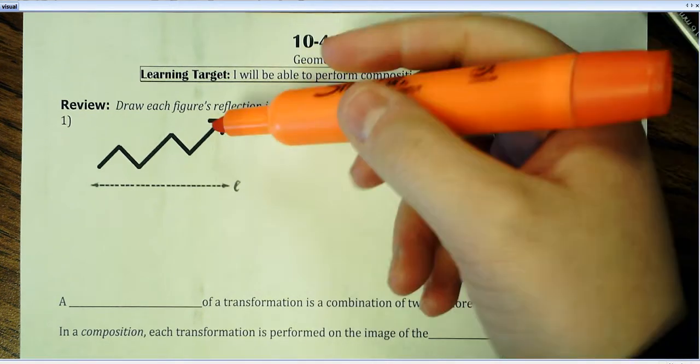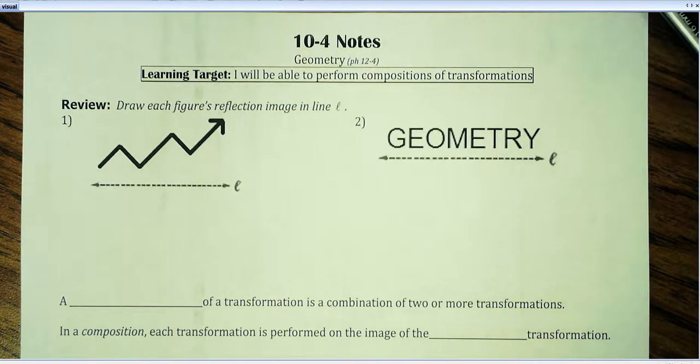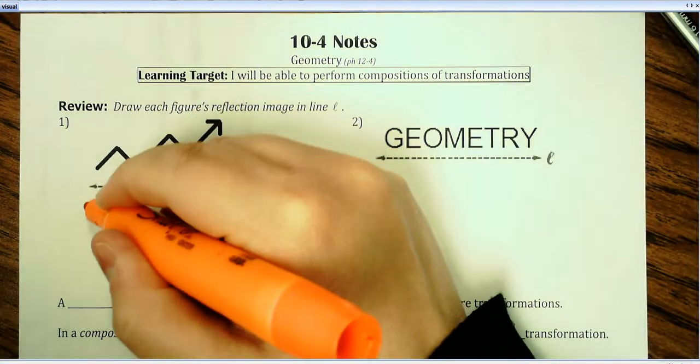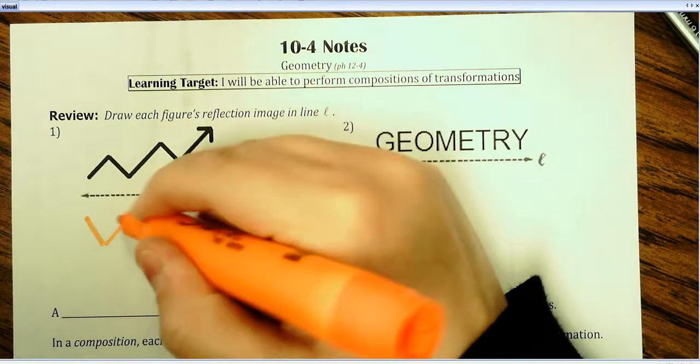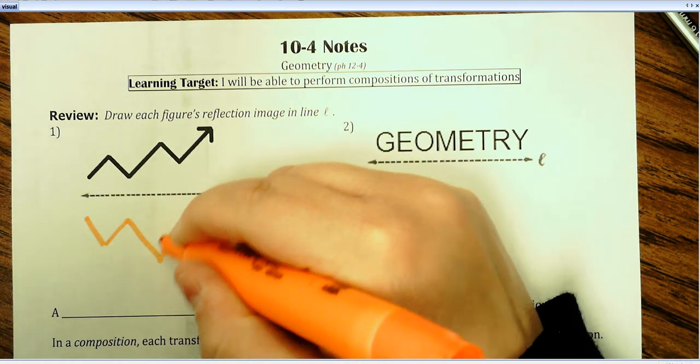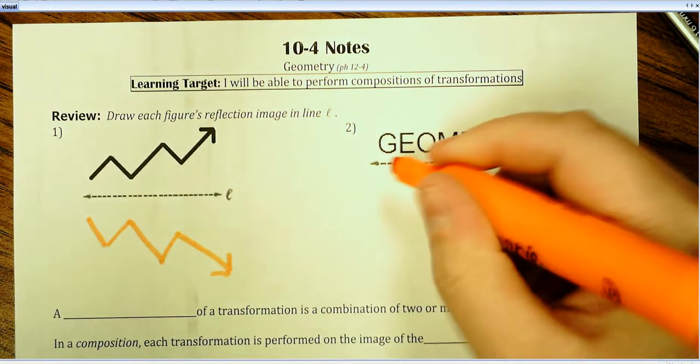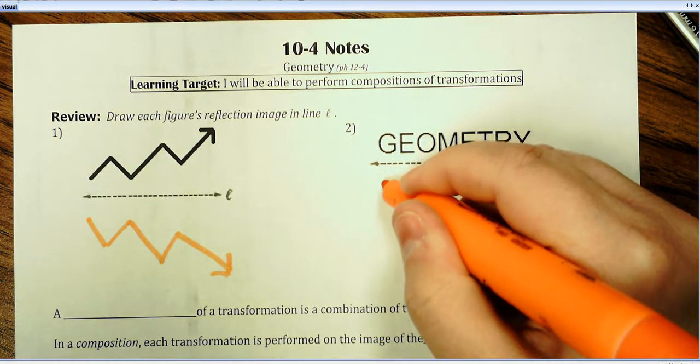So we're going to do our best to draw reflection of the given pre-image over the reflection line. Just kind of do your best to sketch a picture here as a little bit of a review. Doesn't have to be perfect, but what would a reflection look like?